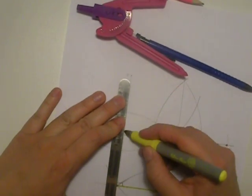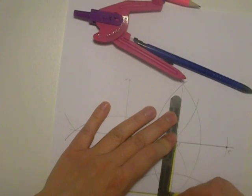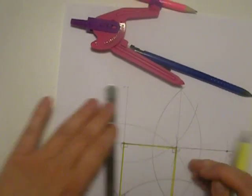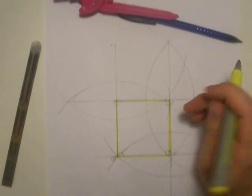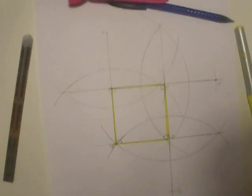We have a square using a compass and a straight edge, using only perpendicular bisectors. Thank you.